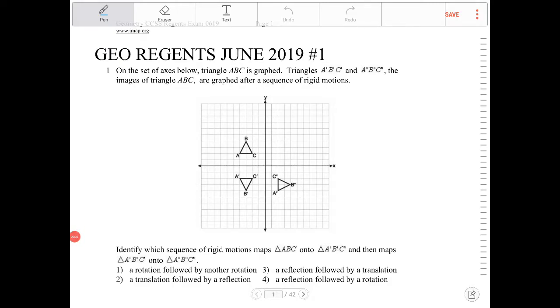On the set of axes below, triangle ABC is graphed. Triangle A'B'C' and A''B''C'', the images of triangle ABC, are graphed after a sequence of rigid motions.